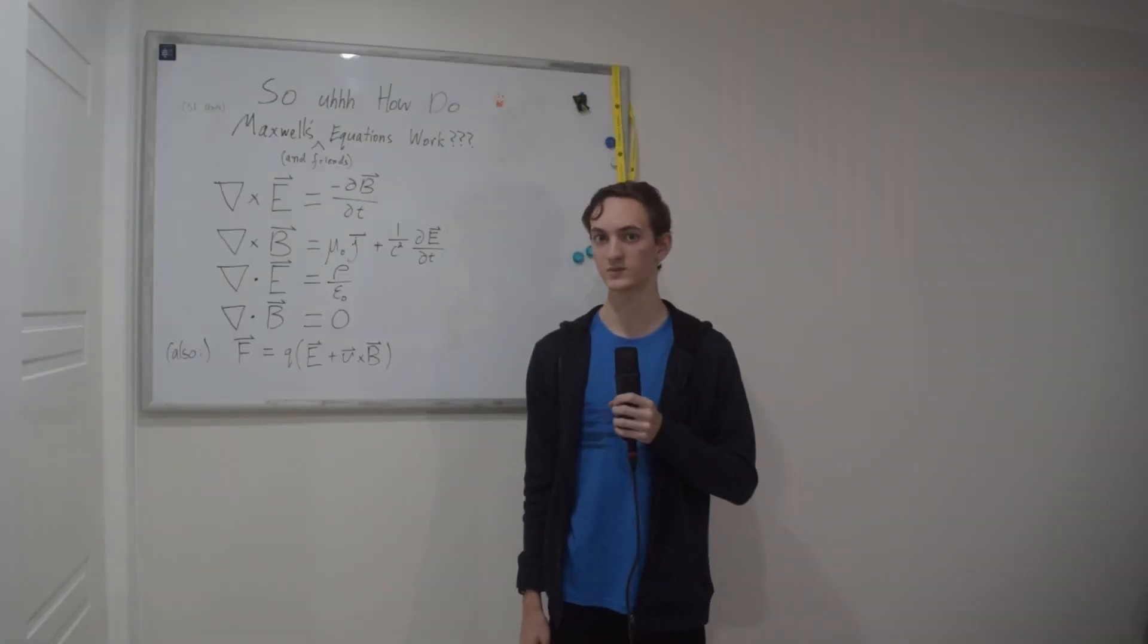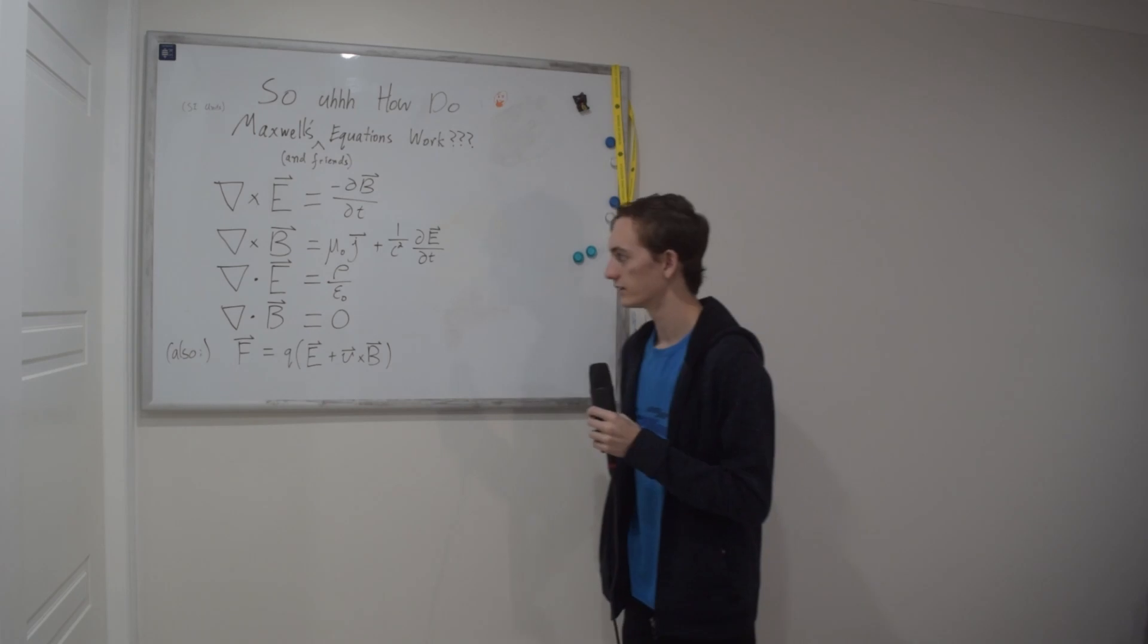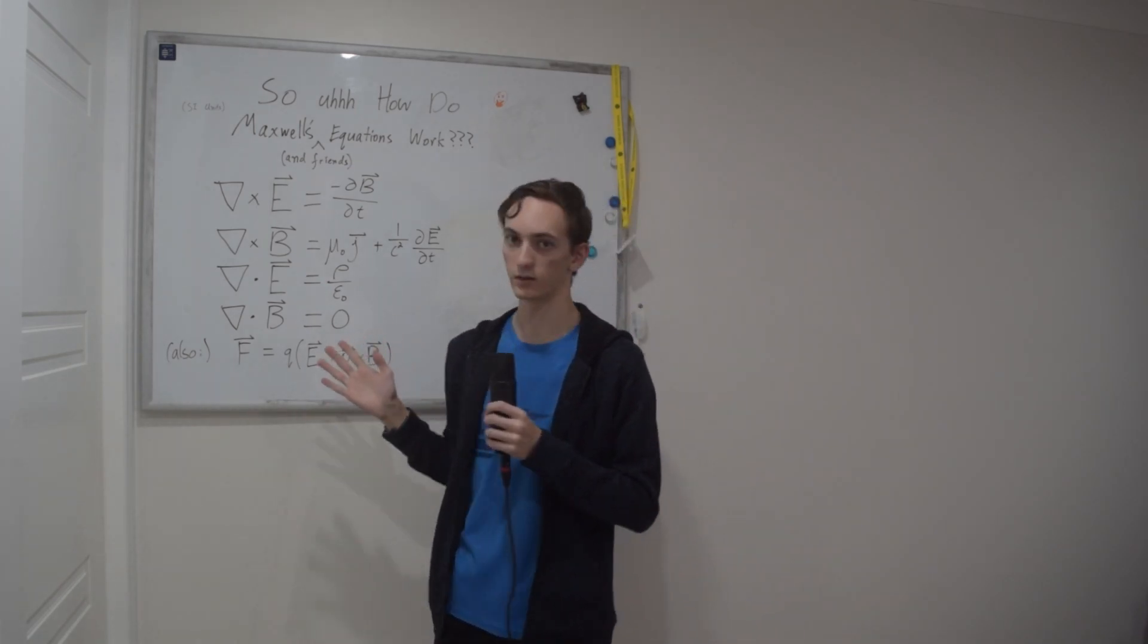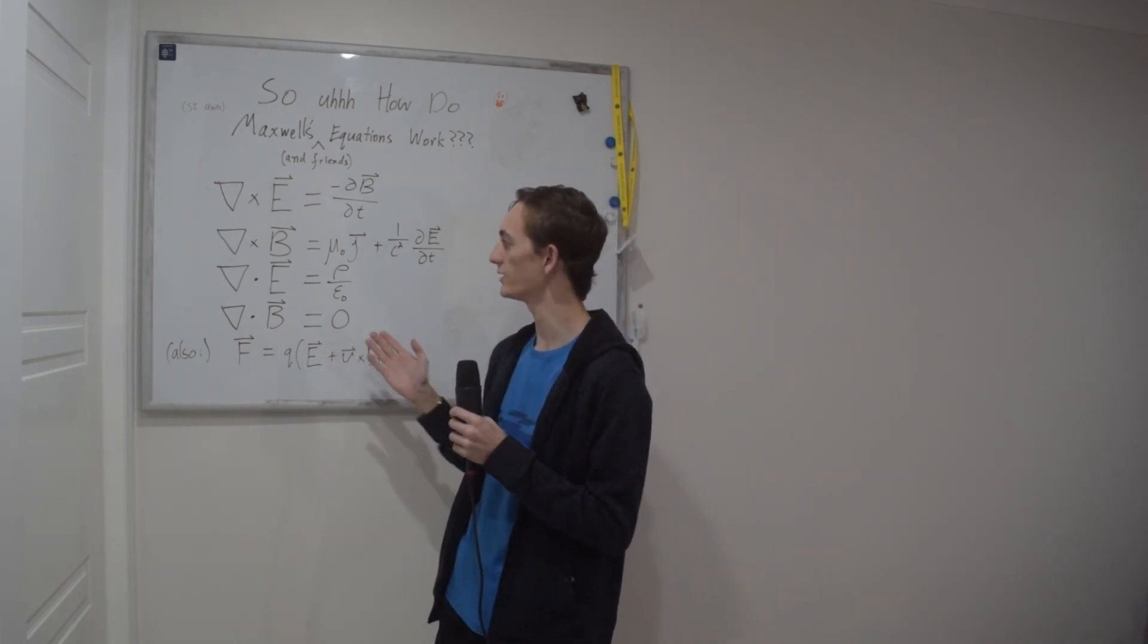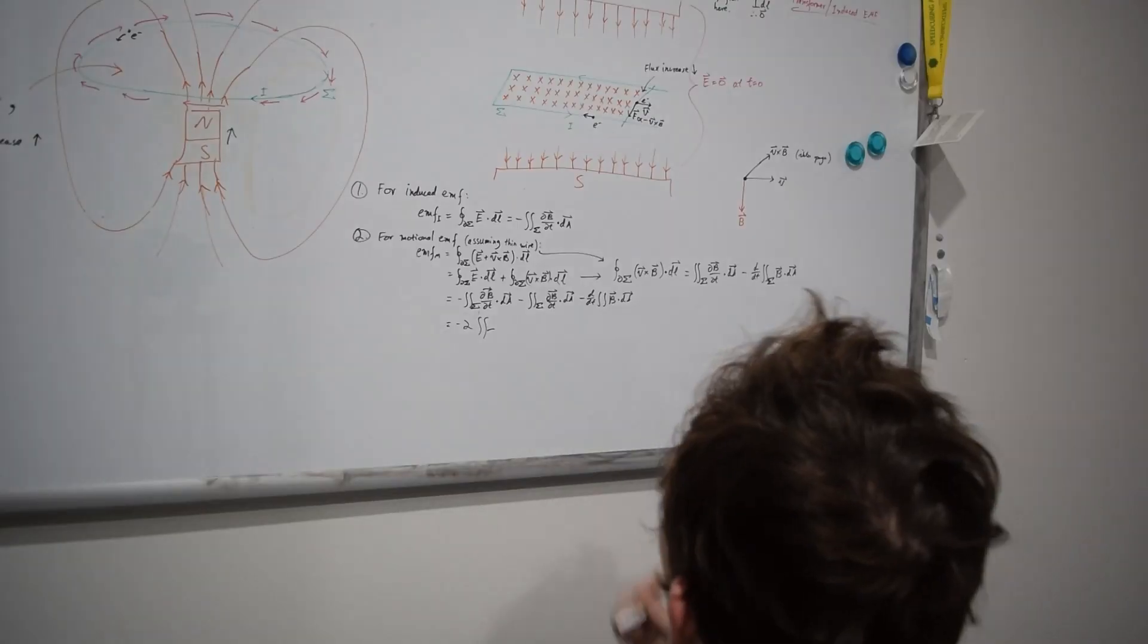So magnets are weird but in a very specific way. This way. Now you may be thinking this is maths, where are the numbers or how do you multiply by a triangle, but I promise it's not as bad as it looks.